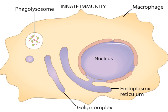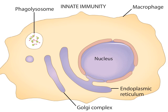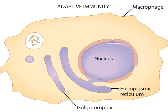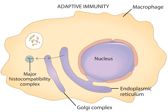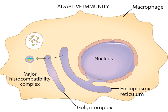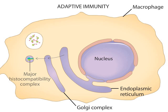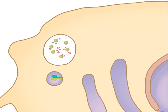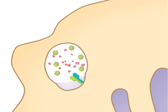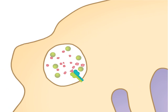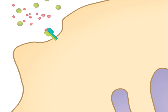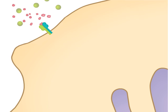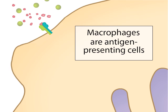But before that happens, the macrophage performs its second function, which is adaptive immunity. Membrane protein structures made in the cell, called major histocompatibility complexes, participate in the first step of adaptive immunity. Small bacterial peptides serve as antigens that can be placed on the major histocompatibility complex. The complex is then delivered to the cell surface, where other cells of the immune system can bind to the displayed antigen and become activated. Thus macrophages are considered antigen-presenting cells.